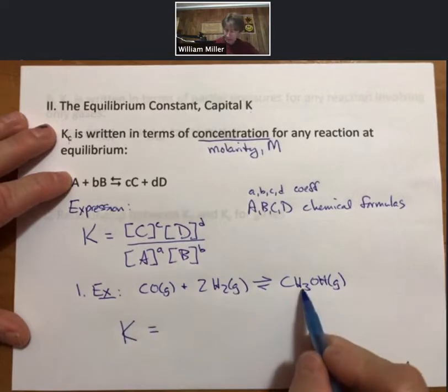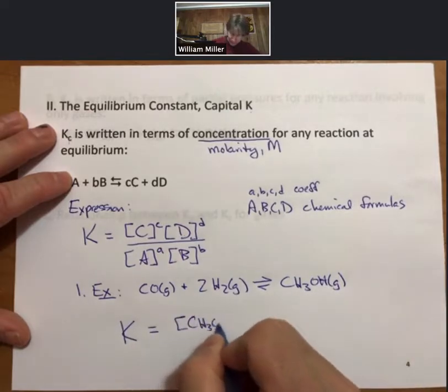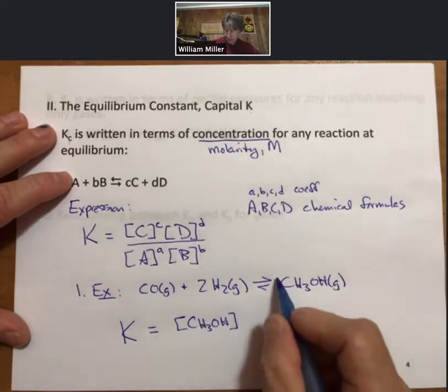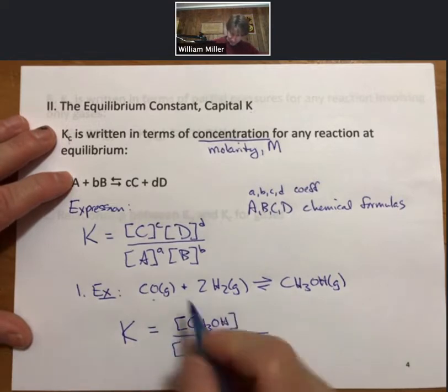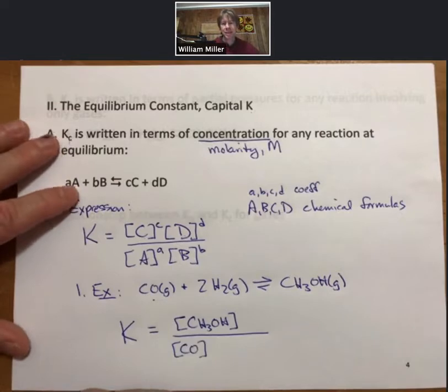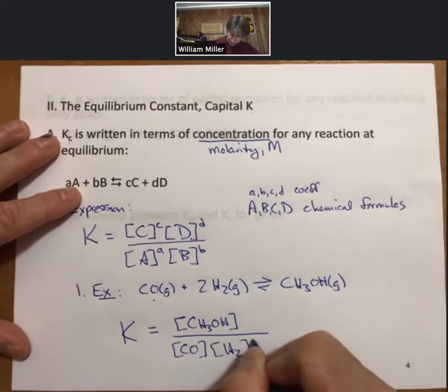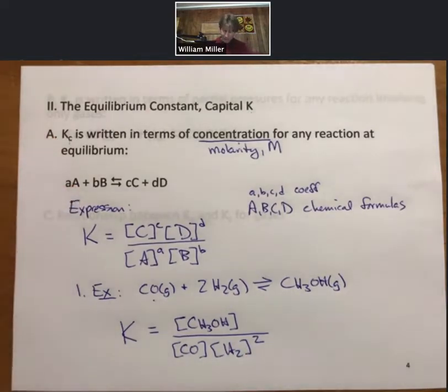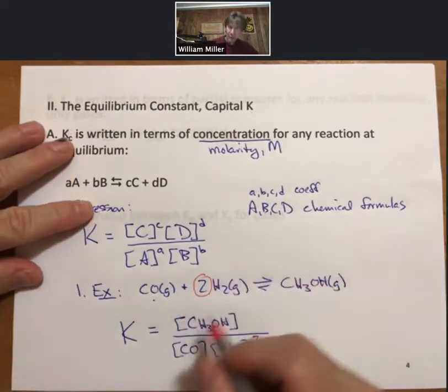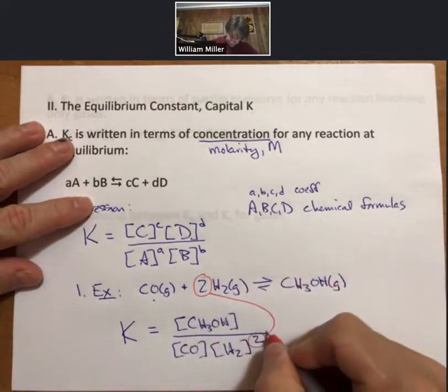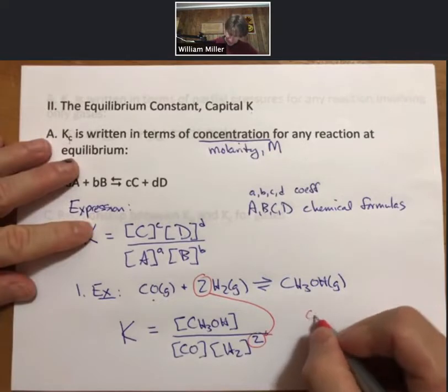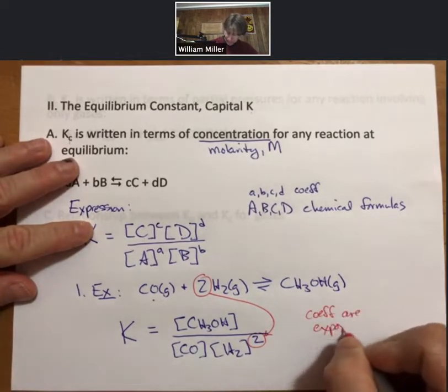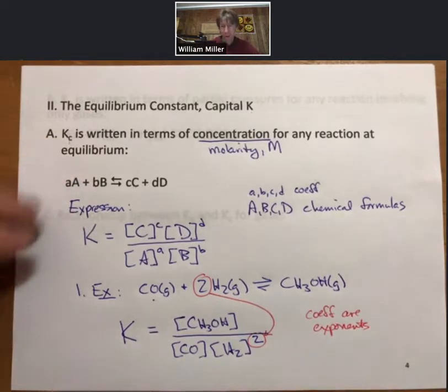Raised to the coefficient, which is just one, so we won't show it, divided by concentration of carbon monoxide raised to the one again, times the concentration of H2 squared, where I just want to be clear, this two that is a coefficient is that two there. Coefficients are exponents in equilibrium constants.